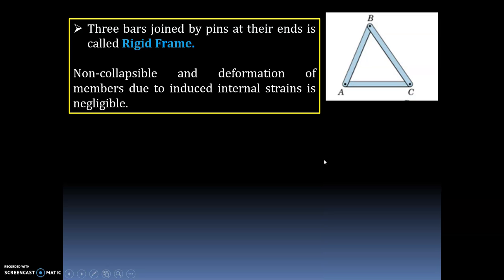Three bars joined by pins at their ends form a rigid frame. It is non-collapsible and deformation of the members due to induced internal strain is negligible — meaning there is no collapsing or deformation because it is properly joined.